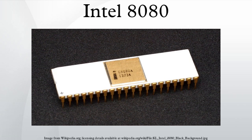The 8080 required two support chips to function: the i8224 clock generator driver and the i8228 bus controller. It was implemented using non-saturated enhancement load NMOS, demanding an extra +12V and -5V supply in addition to the main TTL-compatible +5V supply.